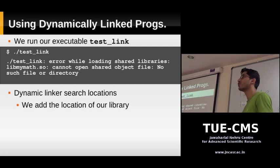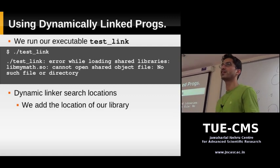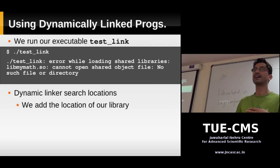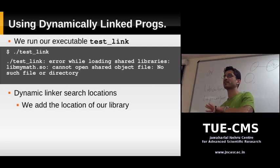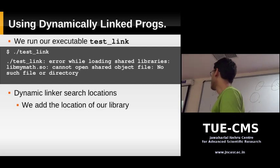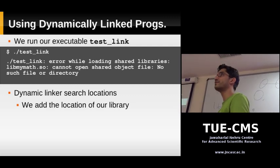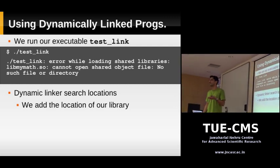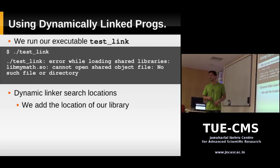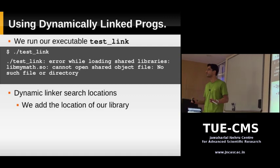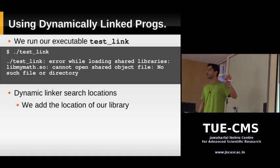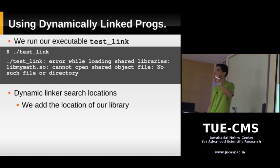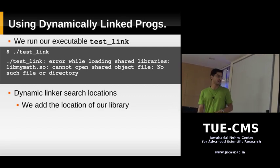The dynamic linker searches for your library file in specific standard directories. Linux's dynamic linker has some specific directories where it looks for libraries. Your program is linked to libmymath.so, so the dynamic linker is looking for this file in those standard locations and it's not going to find it because the file is in your current directory. So because it cannot find this library, it's going to complain and it's not going to run. What we need to do is tell the dynamic linker where to find our library.